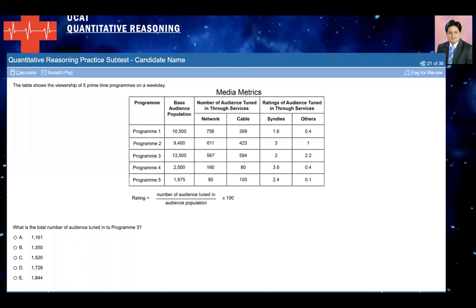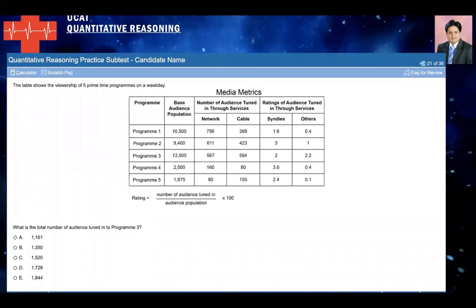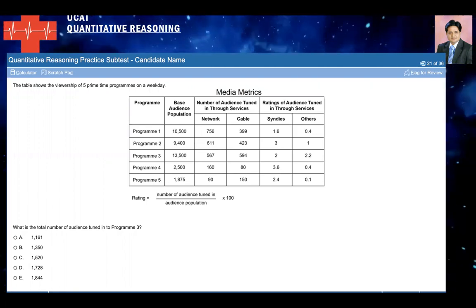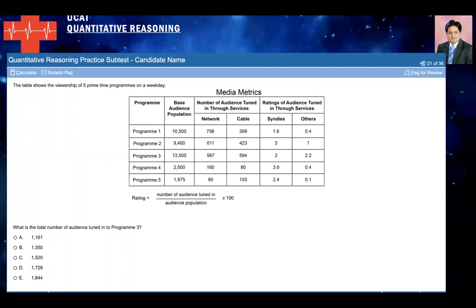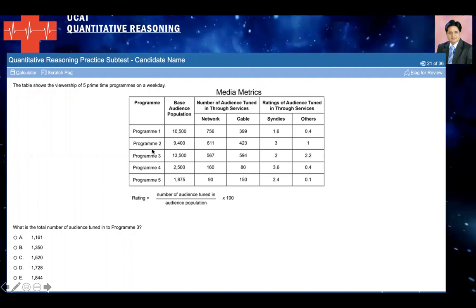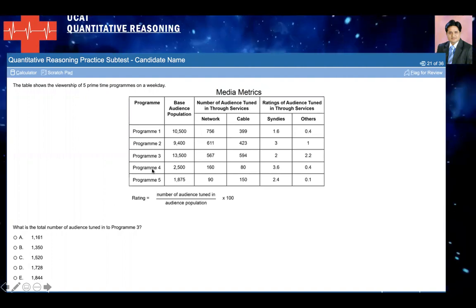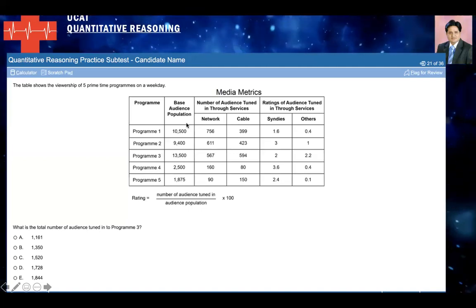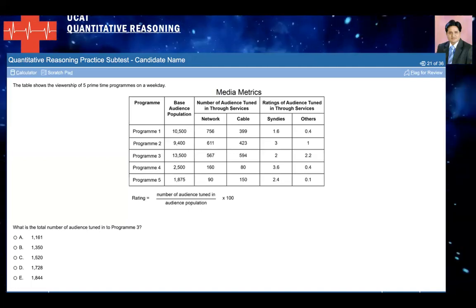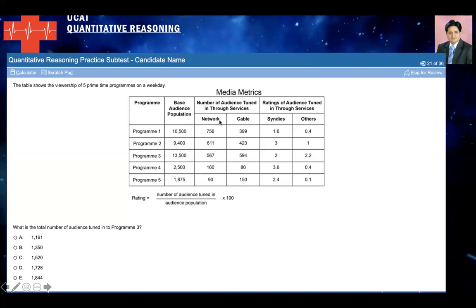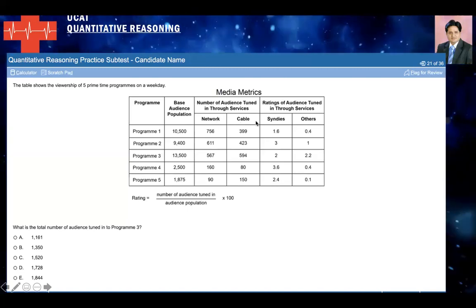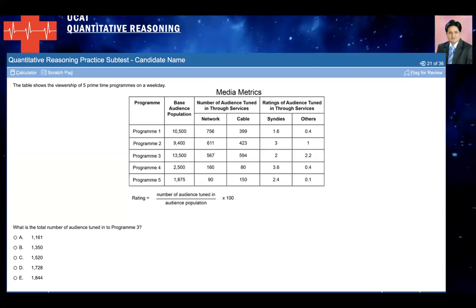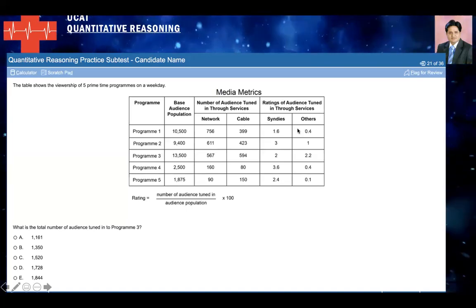Here comes your first question. You have a table which shows the viewership of five prime time programs on a weekday. You have program one, program two, program three, four, and five. You have the base audience population, the number of audience tuned in through services, network and cable, and rating of audience tuned in through services — Sundays and others.